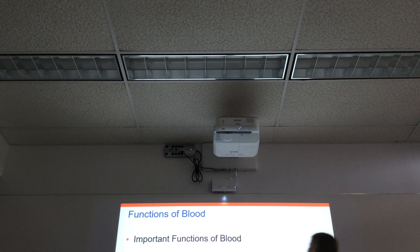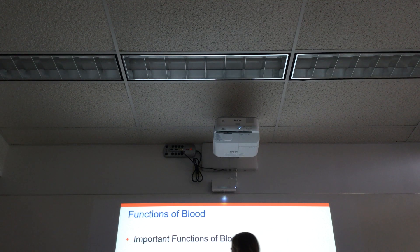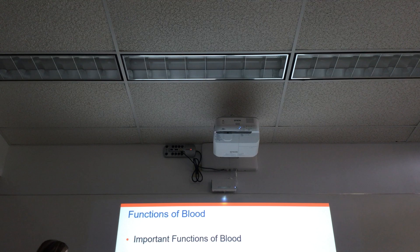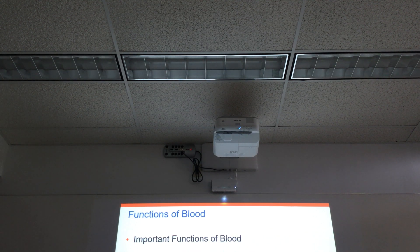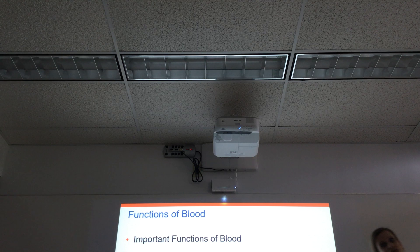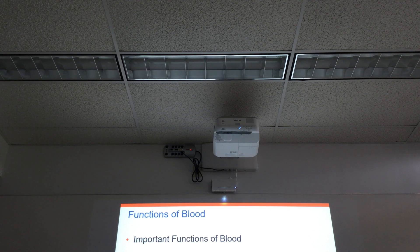So the blood has many important functions. The main and most obvious function of the blood is the transportation of dissolved substances. Most things that move through the body move through the bloodstream — if you have oxygen from the lungs, it goes into the blood and then off to the periphery. If there are waste products to carry away, they go into the blood and get carried to the liver, the kidneys, the lungs, wherever we're going to get rid of them.